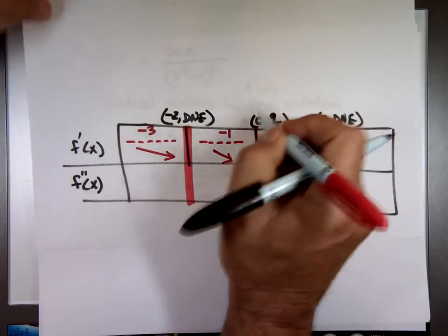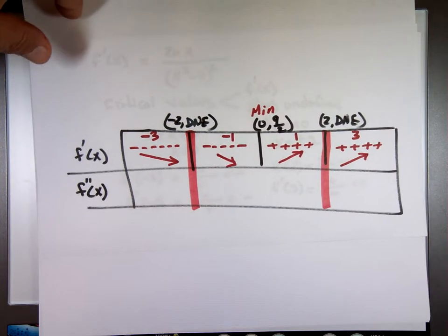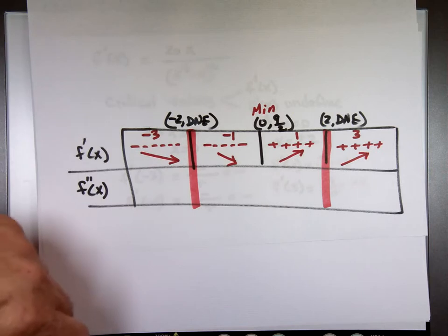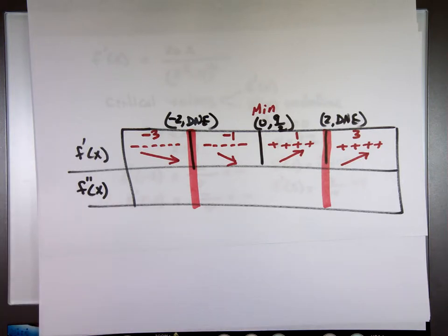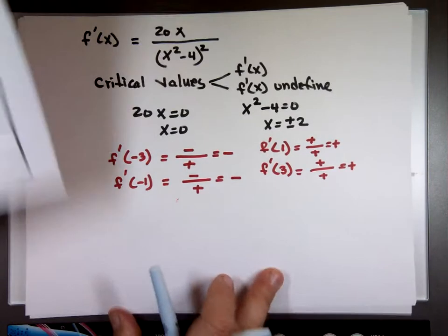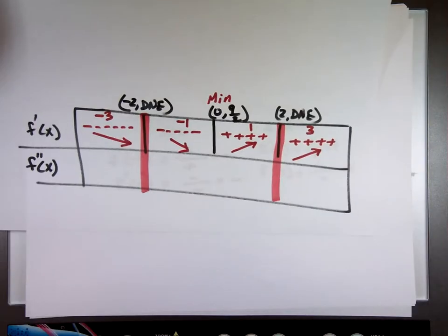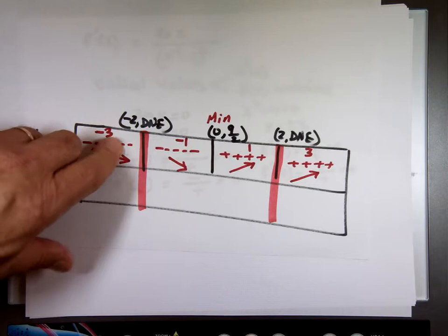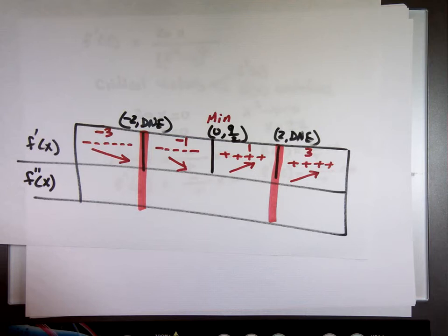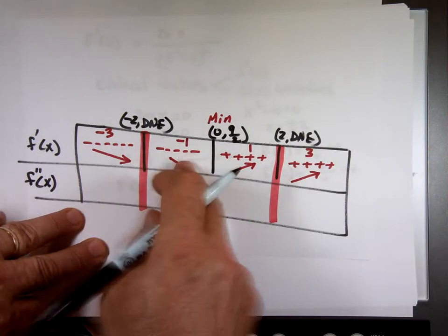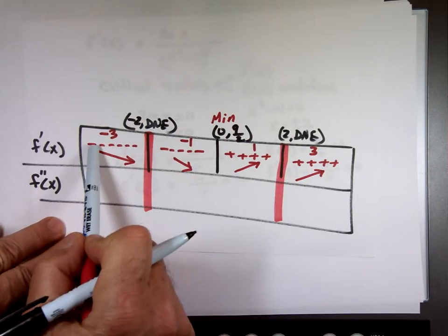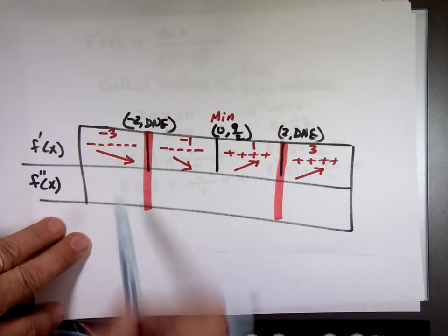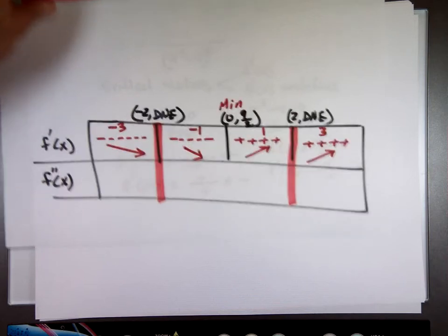I know we have a min point here — decreasing then increasing. I'm done with the first derivative. What's the next move? The second derivative. One quick question: if you can't use negative two or two, why not just eliminate them? You can't — you still need to test each segment. What you're going to see in the second derivative is going to change, possibly. Now let's do the second derivative on a clean page.